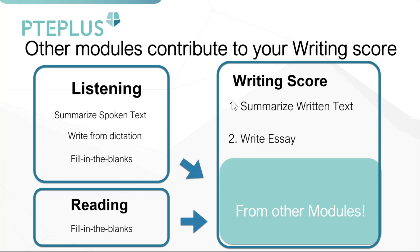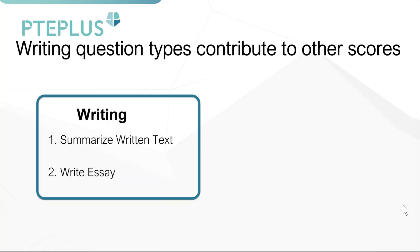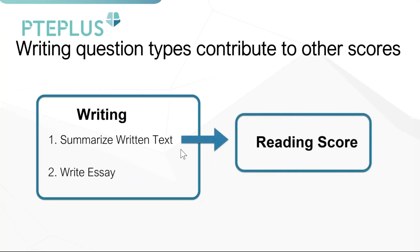This stresses the importance that when you're preparing for writing, you need to also study for these question types in the other sections, because they are just as important for your writing score. The third key thing to understand is that it works the other way too — Summarize Written Text requires you to read a text and then summarize it, so it's also assessing your reading skills, which means it contributes to your reading score as well.